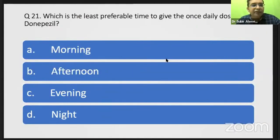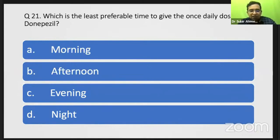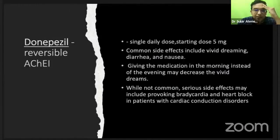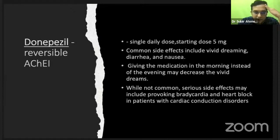Regarding donepezil dosing — which is the least preferable time to give once-daily dosing? We have discussed all the drugs for Alzheimer's disease: donepezil, rivastigmine, tacrine, galantamine, memantine, etc. Tacrine is not used because of hepatotoxicity. Side effects include vivid dreaming, diarrhea, and nausea. Medication should be given in the morning instead of evening, because giving it in the evening increases the likelihood of vivid dreams.